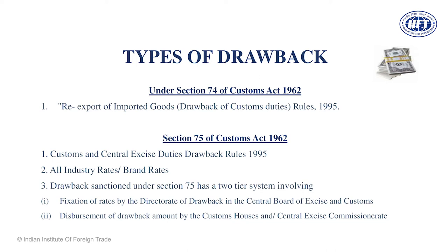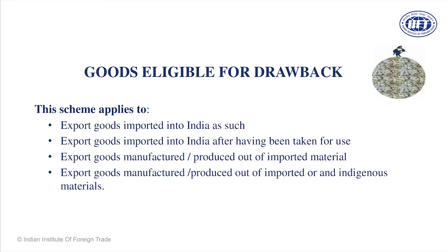Under the Customs Act there is a detailed procedure for refund of those taxes. The relevant sections are Section 74 and Section 75. Section 74 covers two types of drawback. First: goods imported into India and re-exported as such — for example, a gentleman in Hyderabad imports electronics cargo from China, clears it at Sanat Nagar in Hyderabad, and then exports it to Dubai. When he imports he pays certain duties, and when he exports he is entitled to claim refund of those duties — that is known as duty drawback.